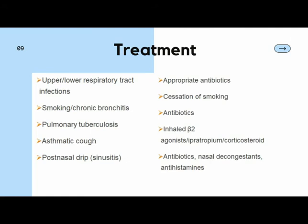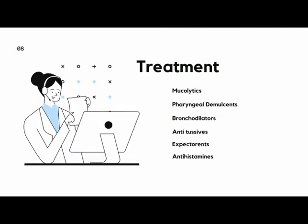Asthmatic cough is treated by inhalation of beta-2 agonists — the most common is salbutamol — and in chronic severe cases, steroid inhalational agents may also be needed. There are also non-specific treatments for cough just to relieve symptoms, such as antitussives and pharyngeal demulcents. For productive cough, we have expectorants, mucolytics, antihistamines, and similar agents.